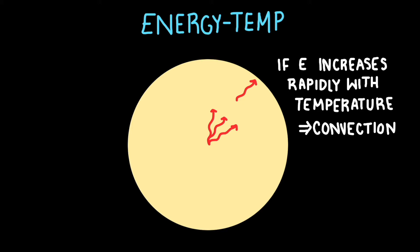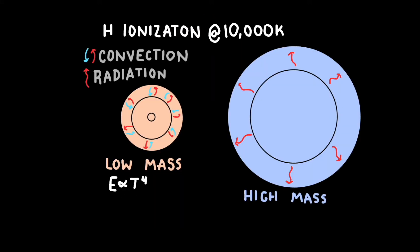Low mass stars have an energy temperature dependence of E proportional to T to the fourth. This energy flux is too steep for radiation to handle, so convection takes over heat transfer in the core of massive stars.